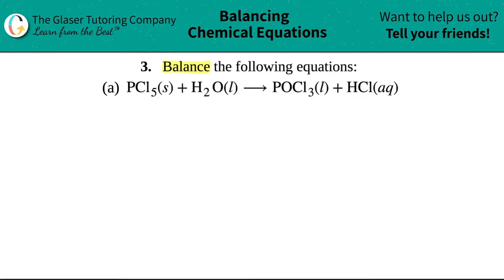We need to balance this reaction. They don't give me much room for coefficients, so I'm going to rewrite this. We have PCl₅ plus H₂O yields POCl₃ plus HCl. I'm not going to put the states because when you're balancing, that has nothing to do with it. Let me center this a little bit.